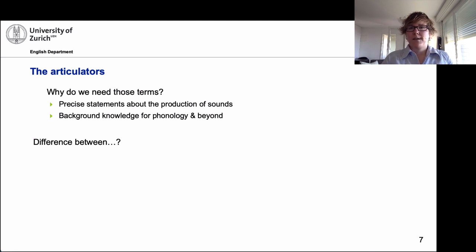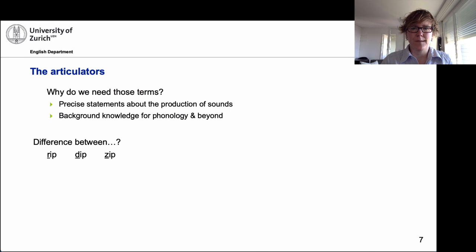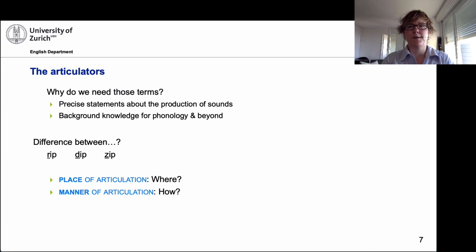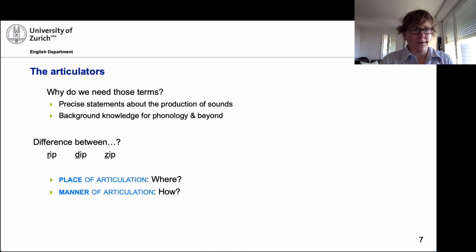If we think about what the difference is between the sounds that represent the underlined letters in 'rip,' 'dip,' and 'zip' — they're produced slightly differently in where and how they're produced. With 'rip' and 'zip,' there is still air coming through; the airflow is not completely obstructed. Whereas with 'dip,' you have a complete stop with the D. With 'zip,' not a complete stop. Also notice that when you produce D and Z, you move your tongue slightly. So there are differences in where you produce them and how you produce them.